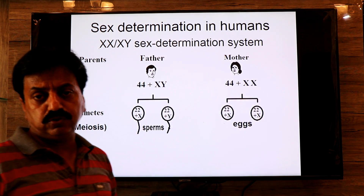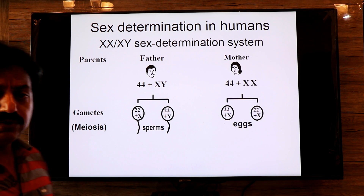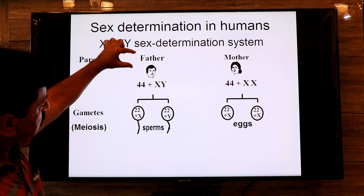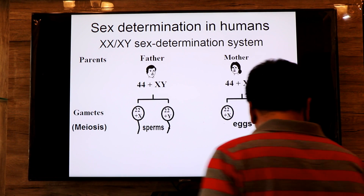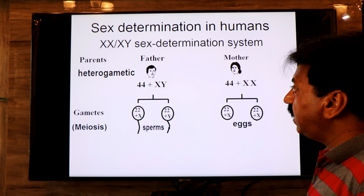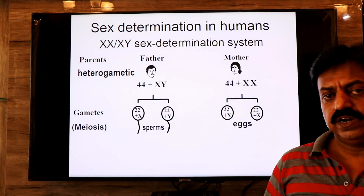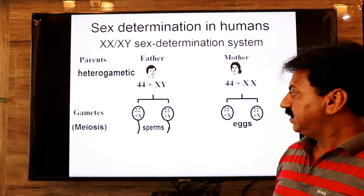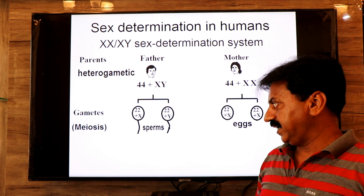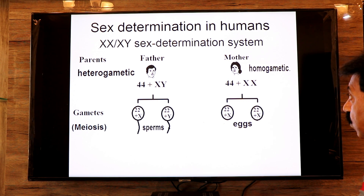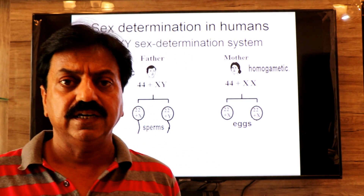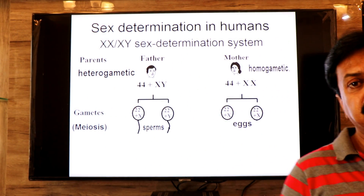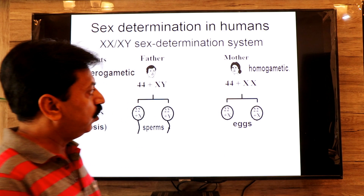The male produces two types of sperm — one with X and one with Y — so they are different from each other. In human beings, the male is always heterogametic. 'Hetero' means different and 'gametes' means gametes — an organism that produces two types of gametes. But the female is homogametic: 'homo' means same. She produces only one type of gamete — both ova contain an X chromosome (22 + X), so she is homogametic.